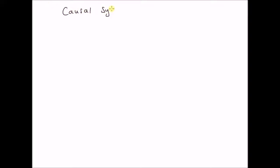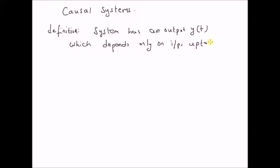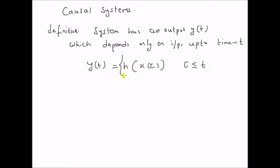Causal systems definition. A system can be defined as causal if the output is dependent only on the inputs up to the current instant. That is, a system has an output y(t) which depends only on inputs up to time t. The output y(t) is a transformation of the inputs x(τ), where τ is less than or equal to the current time t. So this is the definition of a causal system.